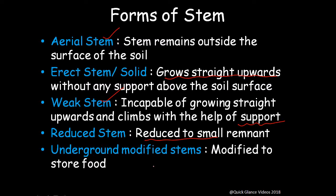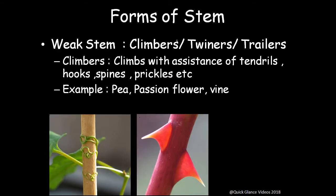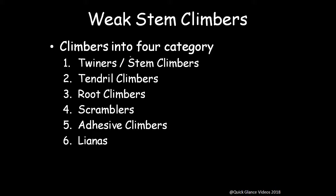Underground modified stems are modified to store food. For the weak stem, we can divide it into climbers, tweeners, and trailers. Climbers climb with the assistance of tendrils, hooks, spines, and prickles — for example, pea, passion flower, and vine. The weak stem climbers are divided into: tweeners (stem climbers), tendril climbers, root climbers, scramblers, adhesive climbers, and lianas.